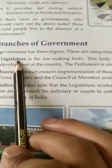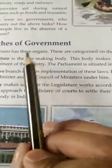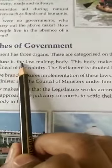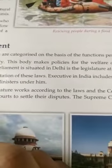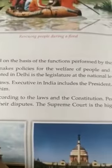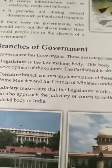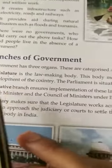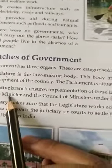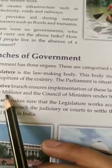Legislature is a lawmaking body. This body makes policies for the welfare of people and the development of the country. The Parliament is situated in Delhi; it is the legislature at the national level. The executive branch ensures implementation of these laws. Executive in India includes the President, the Prime Minister and the council of ministers under him.